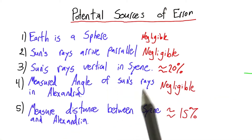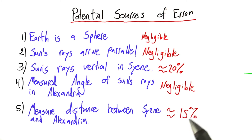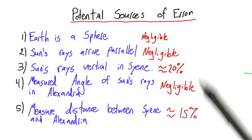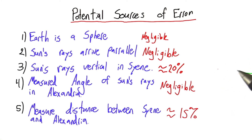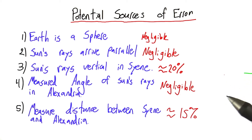All right, so we've looked at all five sources of error. Some we've determined were negligible, some had quite an effect. And you've really learned a lot in this unit. You've learned not only how to do basic trigonometry, which itself is a powerful tool — you know how to go outside on a sunny day, ideally near the solstice, and calculate the circumference of the earth.